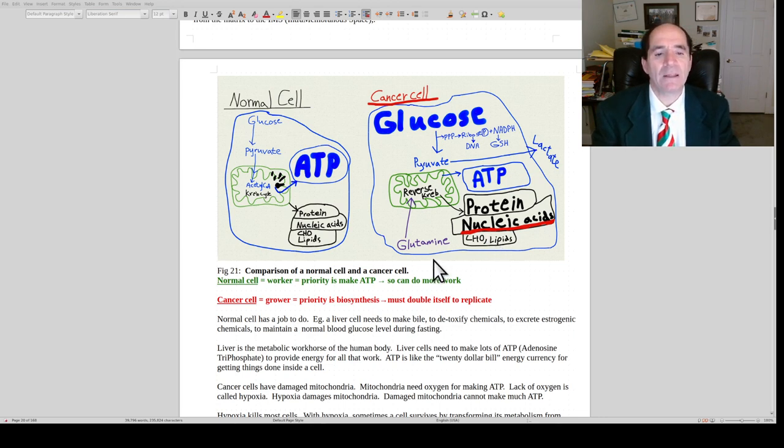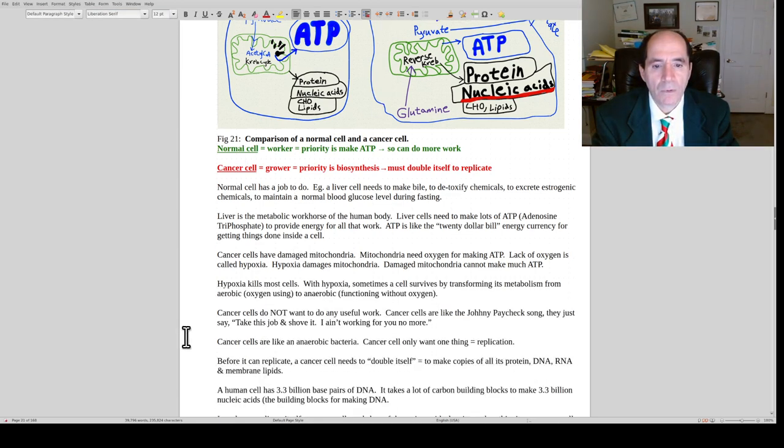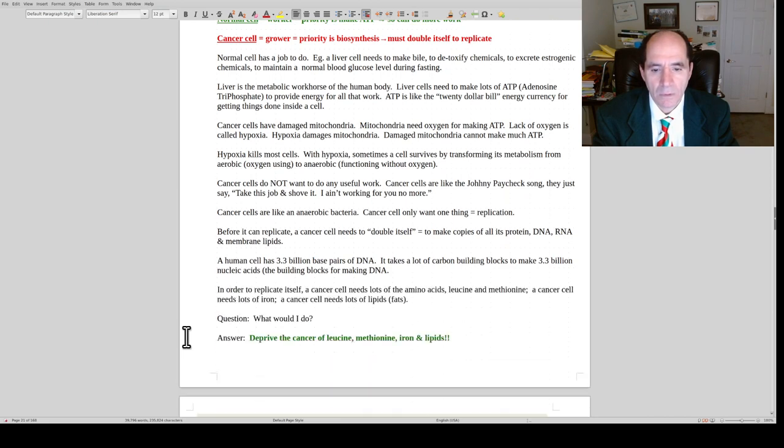It can run especially on glucose, but it can also run especially on glutamine. That's the problem with keto paleo diets. It can run everything off glutamine, which is a very common amino acid. So you can't starve cancer just by trying to lower dietary glucose. That's not going to work. What you really want to do, like what would I do if I had cancer? I would want to deprive it of leucine, methionine, iron, and lipids.